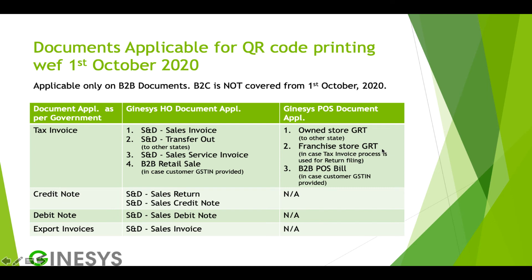Franchisee store returns are applicable where the tax invoice process is used — that is, where the franchisee issues tax invoices and you receive it as inward supply. This applies to franchisee stores with a turnover of 500 crore or above. B2B POS bills from your own store are also included. For credit notes, we have sales return in head office and sales credit note. For debit notes, we have sales debit note. For export invoices, we have sales invoice.